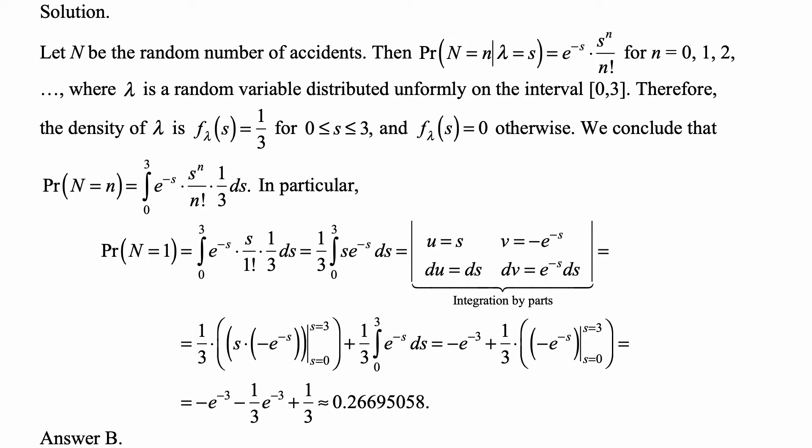Here's a solution. Let us write N for the random number of accidents. Then probability of N equals n given that lambda equals s is e to the minus s times s to the nth over n factorial for n equal to 0, 1, 2, and so on, where lambda is a random variable uniformly distributed on the interval from 0 to 3. Therefore, the density of lambda is f_λ(s) equal to 1/3 for s between 0 and 3, and f_λ(s) is 0 otherwise.